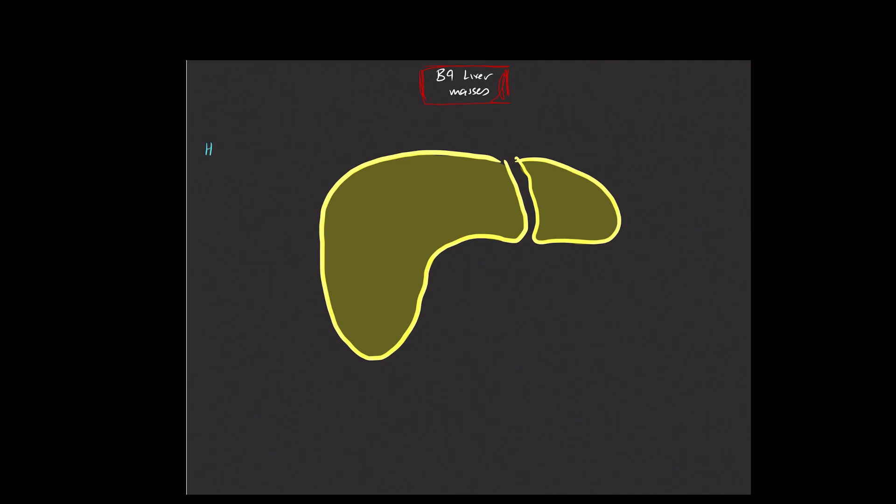The first lesion that I'm going to talk about is the liver hemangioma. These come in several varieties. The classic hemangioma is known as the cavernous hemangioma. You're going to think of cavernous hemangioma when you see a mass in the liver. On the T2-weighted images, the mass will be T2 hyperintense.